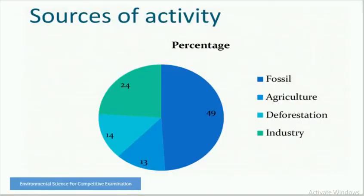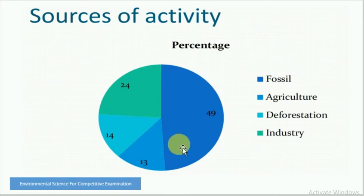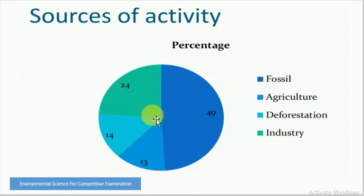Looking at the sources of greenhouse gases by activity: fossil fuels contribute 49%, industries 24%, deforestation 14%, and agriculture 13%.